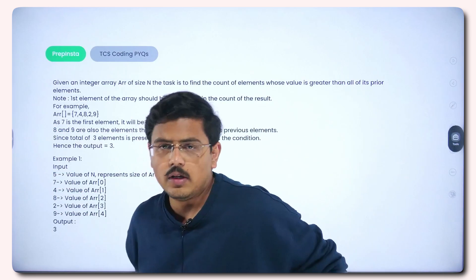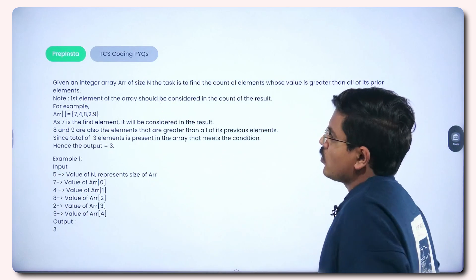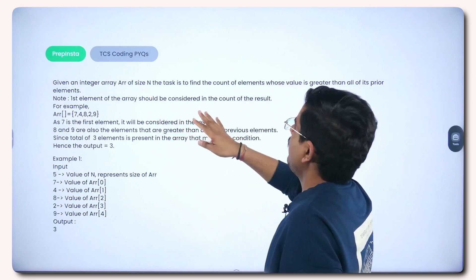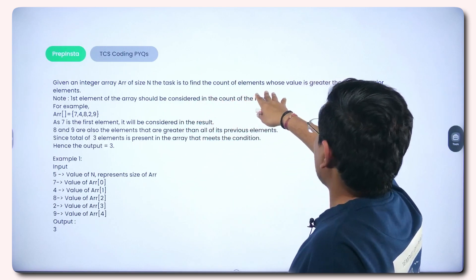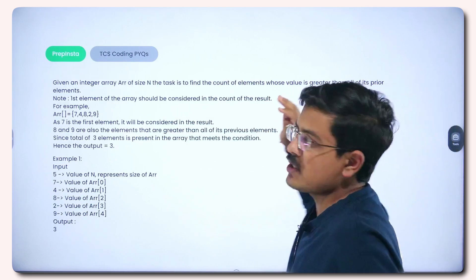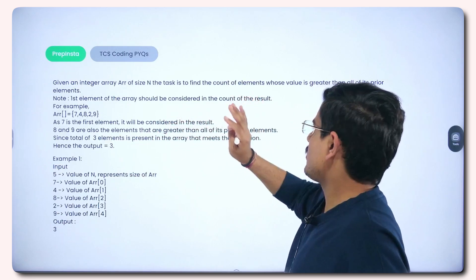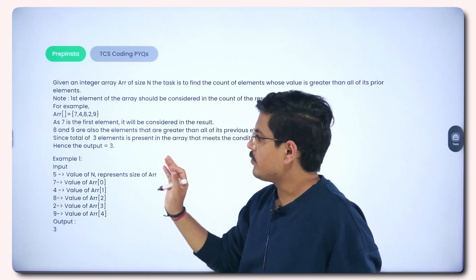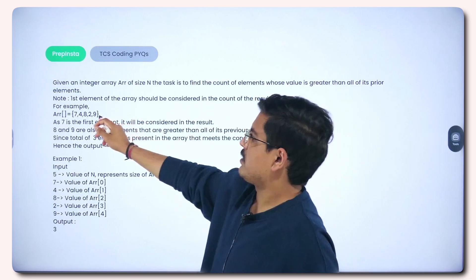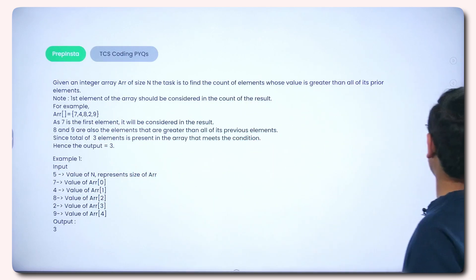So this is the question: there is an array arr of size n. The task is to find the count of elements whose value is greater than all of its prior elements. The first element of the array should be considered in the count of the result. An example is given — we'll understand what exactly the question is asking.